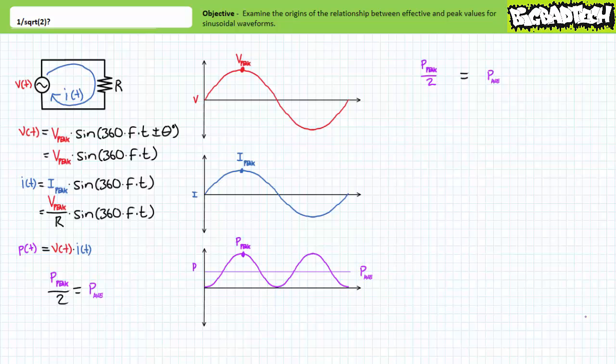As we've demonstrated, average power is peak power divided by two. Several methods exist for determining peak power. Notably, peak power equals voltage peak times current peak, voltage peak squared divided by resistance, and current peak squared times resistance. Either formula should yield the correct peak power value and dividing peak power by two results in our average power. Thus far, you should be tracking.